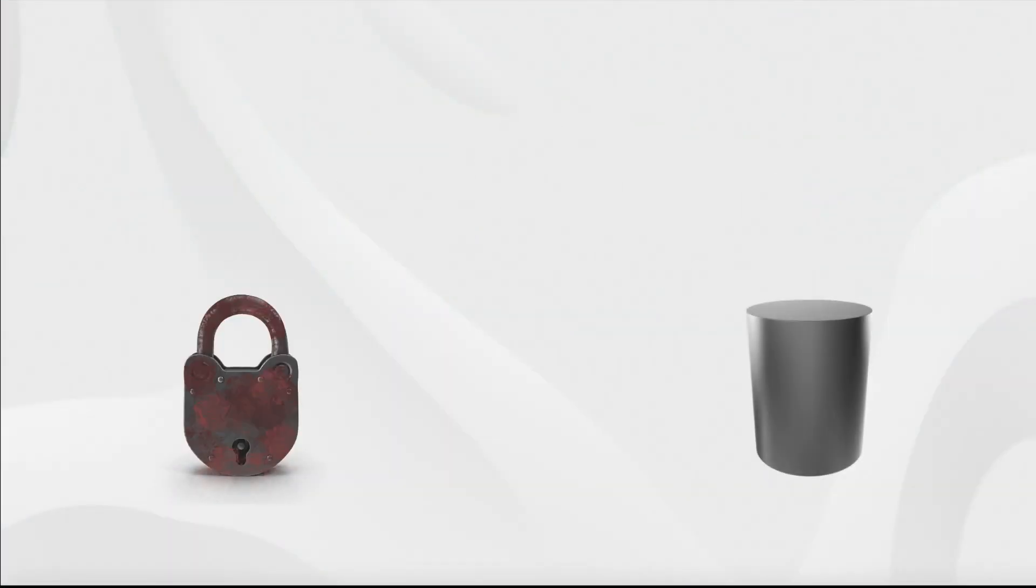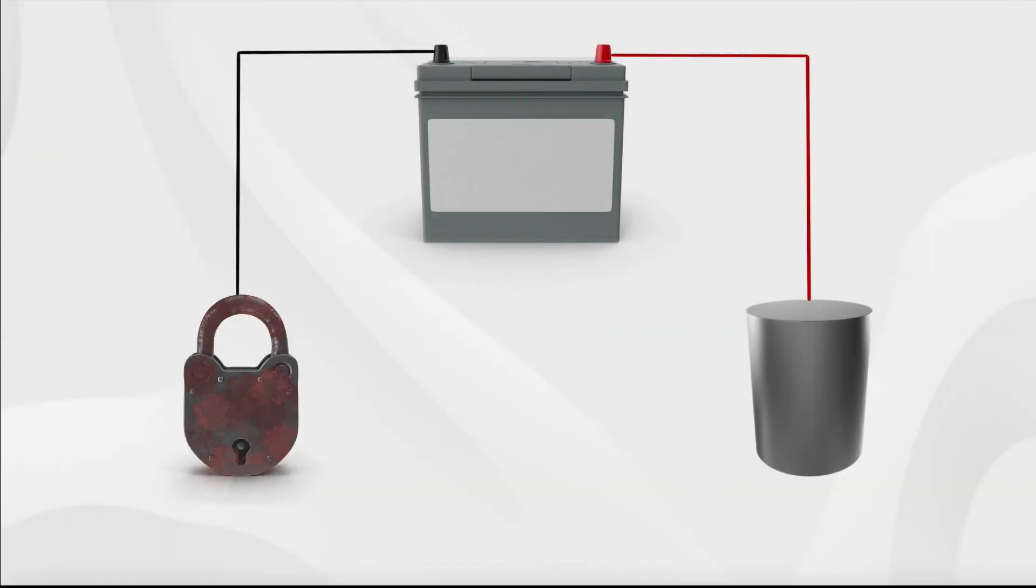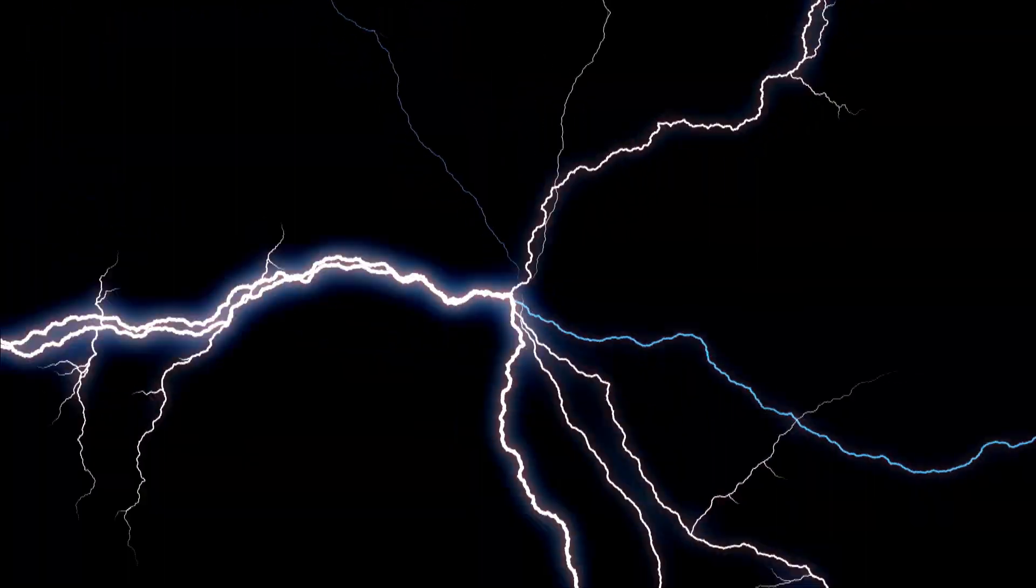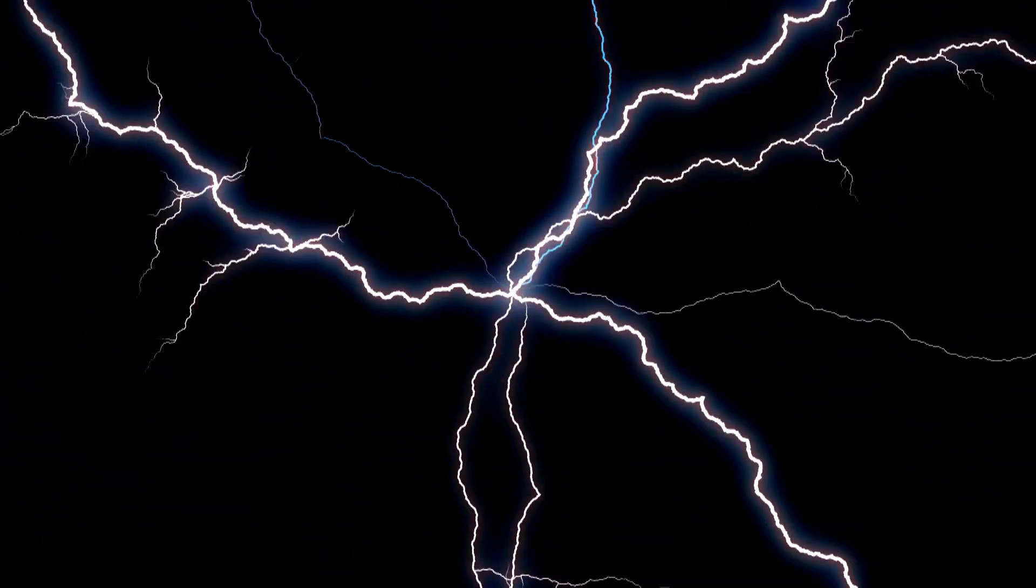Electrolysis involves passing an electric current through a conductive solution to affect a chemical change in the oxidized iron without harming the non-oxidized metal beneath it which makes it an ideal process to apply to locks which have delicate internal mechanisms. To do this you're going to need to gather a few items and then follow these instructions carefully because we will be using water and electricity which isn't something you want to get wrong.